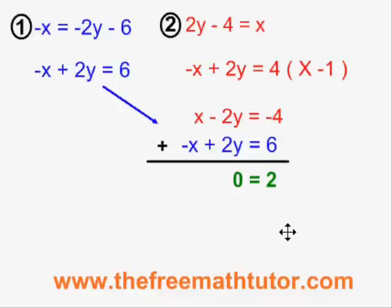This will always happen when you have parallel lines and you are using the elimination through addition method. All of the variables will cancel out into a 0 and on the other side you end up with a constant term like 2. The statement 0 equals 2 makes no sense and this is our clue that we have a special case here.